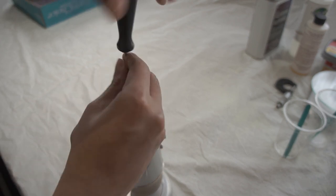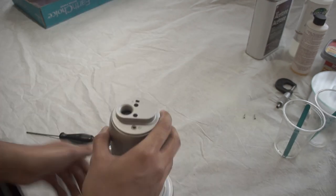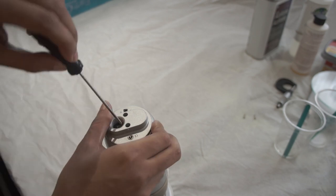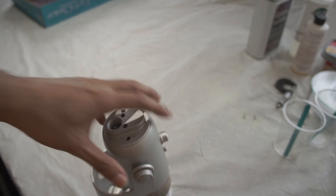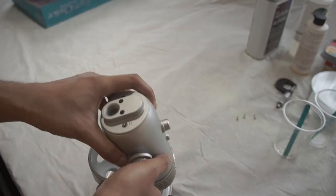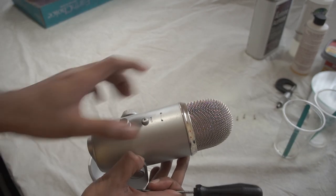First, you want to remove the two screws located in the bottom and the third located underneath the rubber grommet in the mount. They should come off pretty easily. The next thing you want to do is remove the knobs.